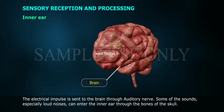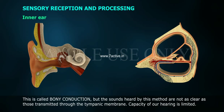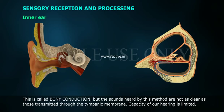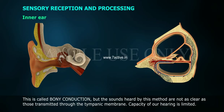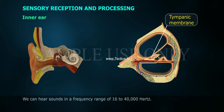The electrical impulse is sent to the brain through the auditory nerve. Some sounds, especially loud noises, can enter the inner ear through the bones of the skull — this is called bony conduction. But the sounds heard by this method are not as clear as those transmitted through the tympanic membrane. The capacity of our hearing is limited; we can hear sounds in a frequency range of 16,000 to 40,000 Hz.